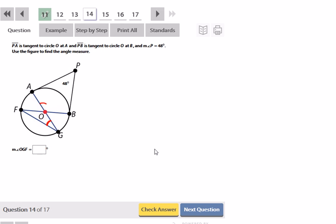The measure here of AOB is going to be... Measure of angle AOB is supplementary to the 48. So that's going to be 180 minus 48. So that's going to give me 132. So this is 132 degrees. And that's a central angle. So that means this arc out here is 132.